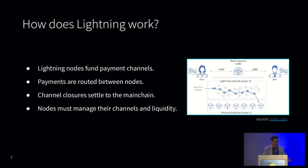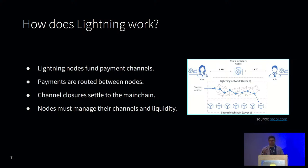Lightning is a network of interconnected nodes which open payment channels with each other by creating a collaborative base layer transaction. While the channel is open between two nodes, many payments can be made in either direction as long as there's sufficient liquidity on the sending side. Since these updates are atomic, if the network is well-connected, payments can find a route from one peer all the way to another over a number of hops. When a channel is closed, the balance is settled to the base layer, giving Lightning nearly instant transactions with very low fees.